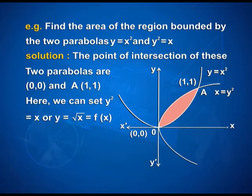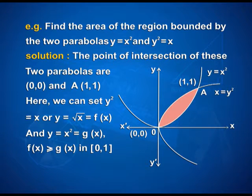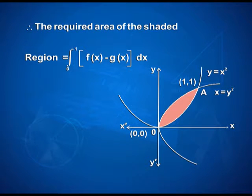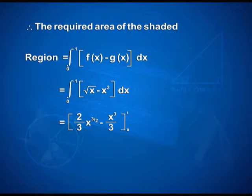We can set y squared equal to x, or y equal to square root of x, that is f(x), and y equal to x squared equal to g(x). Here f(x) is greater than or equal to g(x) in the interval [0, 1]. We can see the two parabolas and their points of intersection at (0, 0) and (1, 1). Therefore, the required area of the shaded region equals the integral from 0 to 1 of [f(x) minus g(x)] dx, that is integral from 0 to 1 of (square root of x minus x squared) dx, which equals [2/3 x to the power 3/2 minus x cubed upon 3] with limits 0 and 1, giving 1/3 square units.